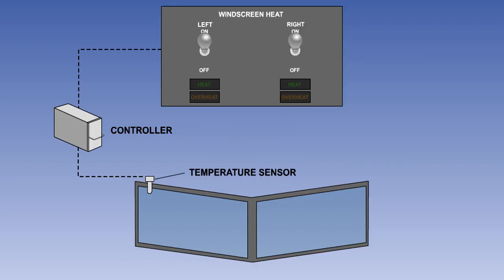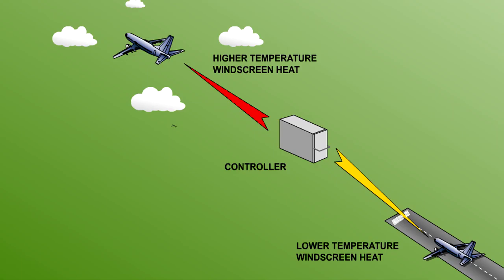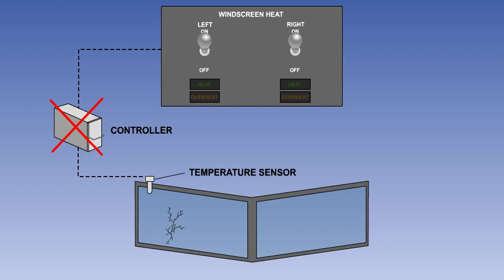In the system using a temperature sensor in the windscreen, the sensor sends temperature signals to an electronic controller. The controller varies the current flow to the windscreen to maintain it at a constant temperature. This is typically around 30 degrees Celsius in flight and a lower temperature, typically 16 degrees, on the ground. A changeover is made by the landing gear air-ground logic system. This system has the advantage of keeping the thermal gradient or temperature difference between the inside and outside of the screen to a minimum, thus increasing the useful life of the screen.